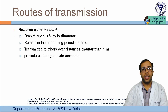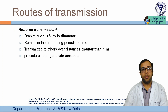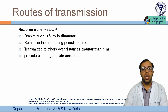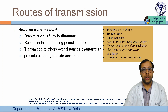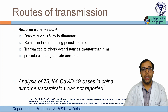As with other respiratory diseases, airborne transmission — through droplet nuclei less than 5 micrometers — is a concern. These smaller particles remain suspended in air for long periods and travel greater distances. They are predominantly generated during aerosol-generating procedures such as endotracheal intubation, bronchoscopy, open suction, nebulization, manual bag-mask ventilation, non-invasive positive pressure ventilation, and CPR. However, a study of over 75,000 COVID-19 patients in China reported airborne transmission is not the major mode.